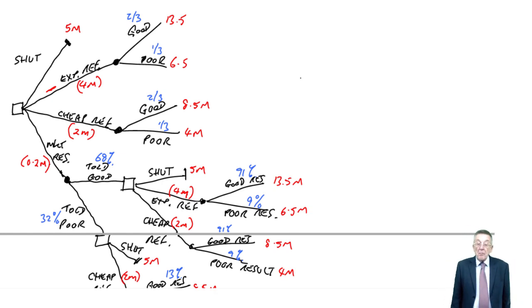So let's go back to the tree and look at these various options. Our main decision as of now is shall I shut or shall I refurbish or market research? Well, shutting, we know what the outcome is. It's five million. The question is whether the other three give us more or less than five million.